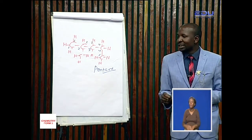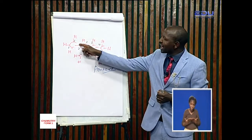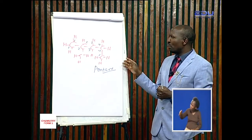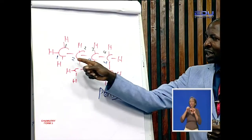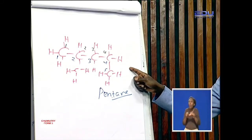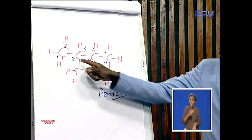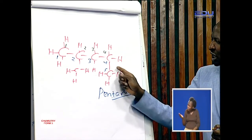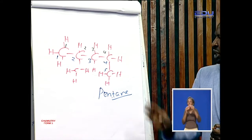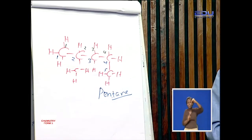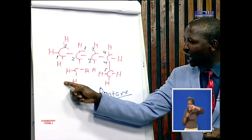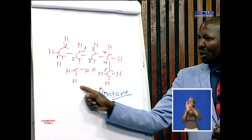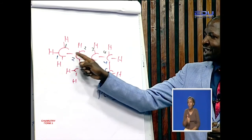Whatever I'm saying is that we are talking about the longest continuous chain, not the longest straight chain. Many learners may get confused between longest straight and longest continuous. When looking for the longest continuous chain, as long as there is a connection — this carbon is linked to the other — that is a continuous chain. If a carbon is not linked to the fifth one, we cannot count it. That's why we say longest continuous.